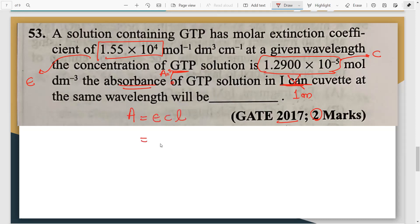You've got epsilon. How much is epsilon? 1.55 into 10 raised to 4. Concentration should be in moles. So that's 1.2900 into 10 raised to minus 5 into 1. Path length always has to be in centimeter. These are some things you need to understand. Now you can simply solve this by simple mathematics. Multiply and when you multiply what answer you get will be the final answer. So this is as simple as it gets. You can pause this and solve it on your own.